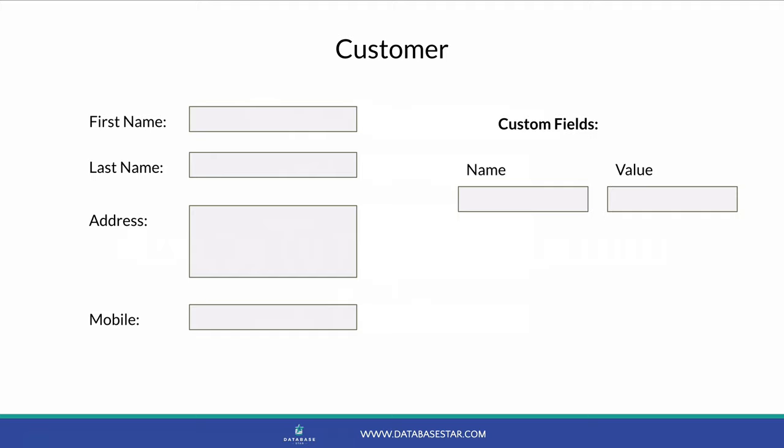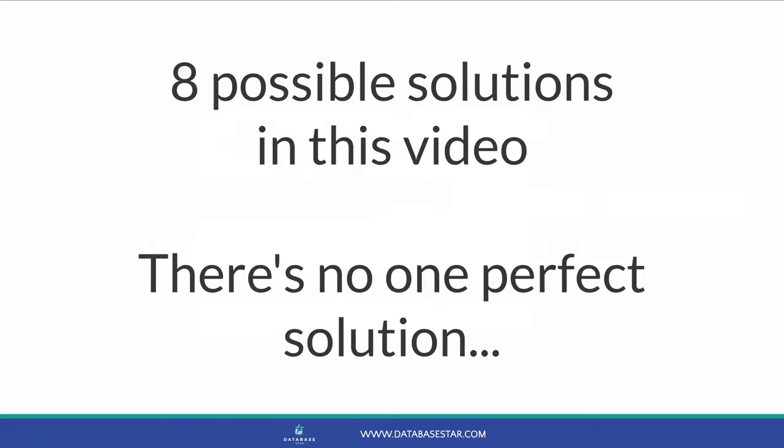For example, a new address type, a phone number type, or a particular type of date that applies to that record only. This seems handy to have in the application, but how do we design our database to handle this? This is a common problem and it's not an easy one to solve. You'll find many posts on Stack Overflow and Reddit about this. In this video, I'll explain eight different solutions that can be applied. Eight solutions might seem like a lot, but they are just options — you can look at them and determine which one will work best for your application and database. There is no one perfect solution for all situations, but there should be one here that will work for you.